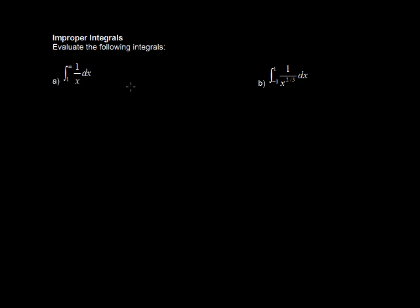In this video, I'll walk through a couple of examples of improper integrals. Improper integrals are when you have one of two things. The first scenario that would give you an improper integral is when one or both of the limits of integration are equal to infinity.